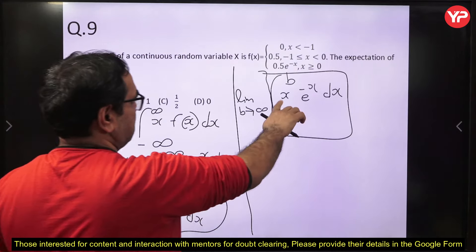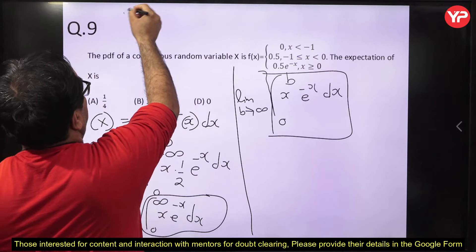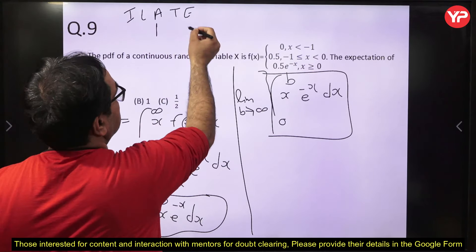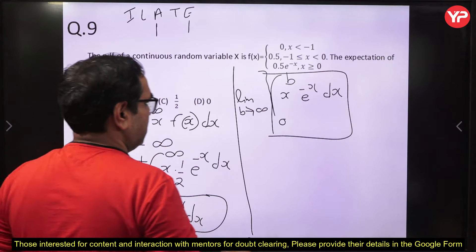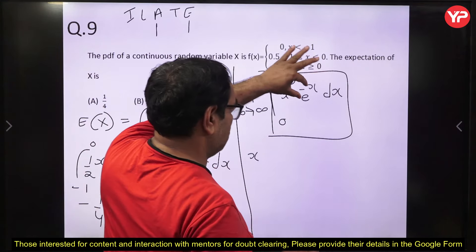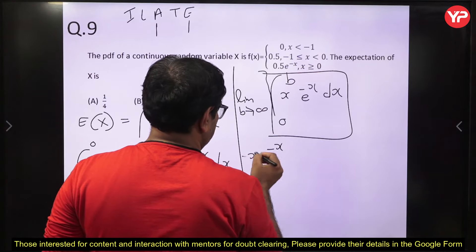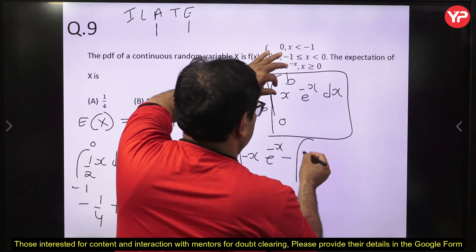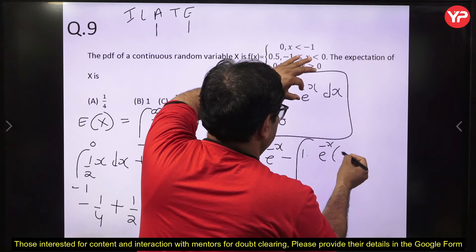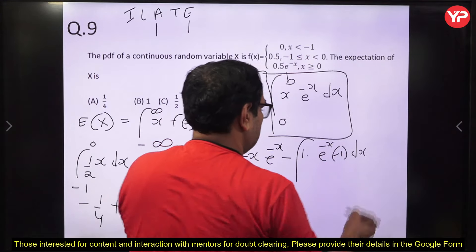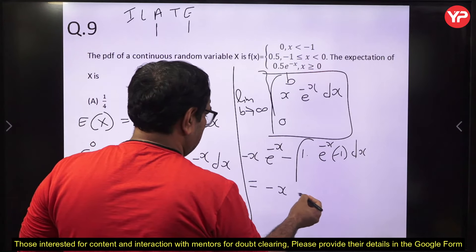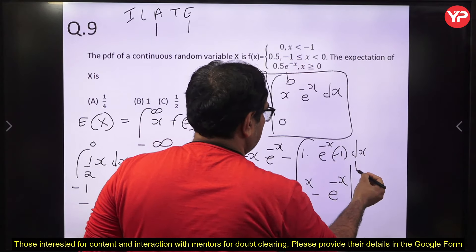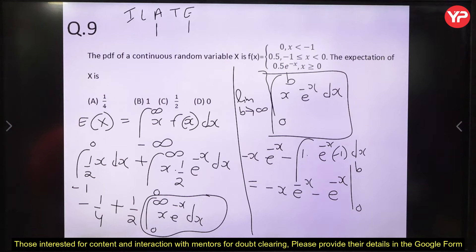Applying limits from 0 to b: [−b·e^(−b) − e^(−b)] − [0 − 1] = 1 − b·e^(−b) − e^(−b). Taking limit as b → ∞: by L'Hôpital's rule, b/e^b → 0 and 1/e^b → 0. So the integral equals 1.